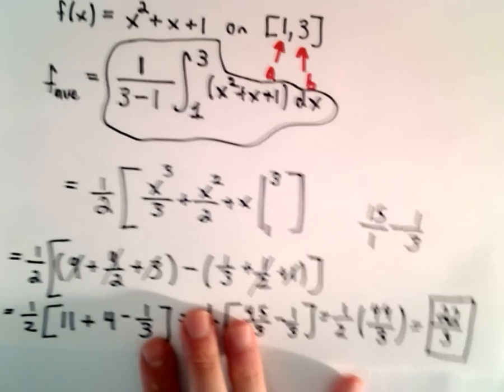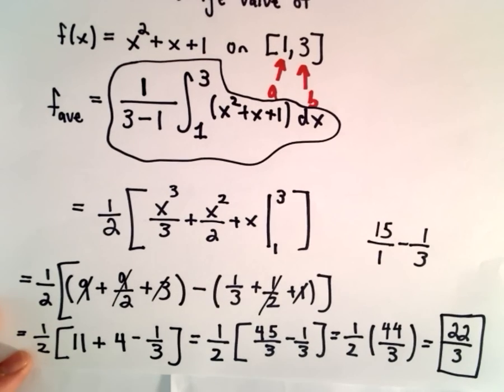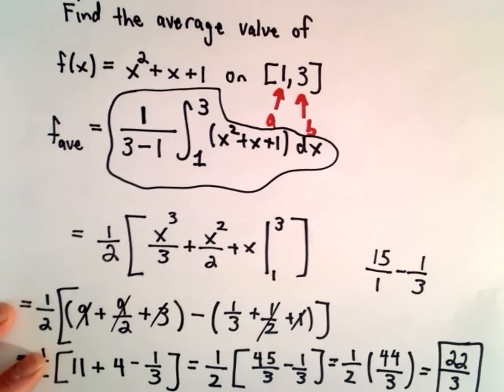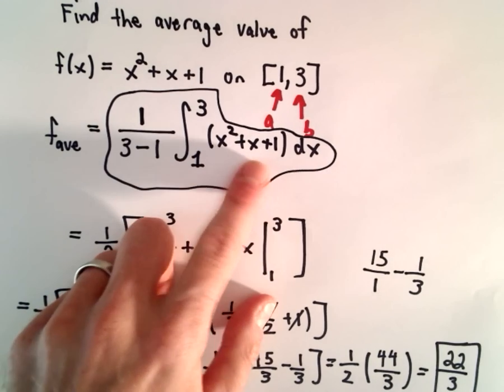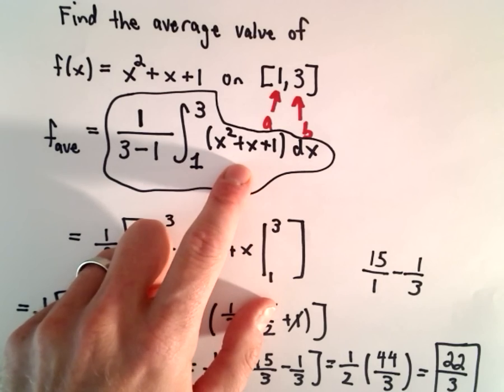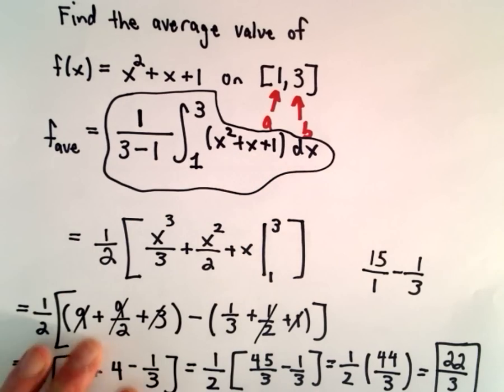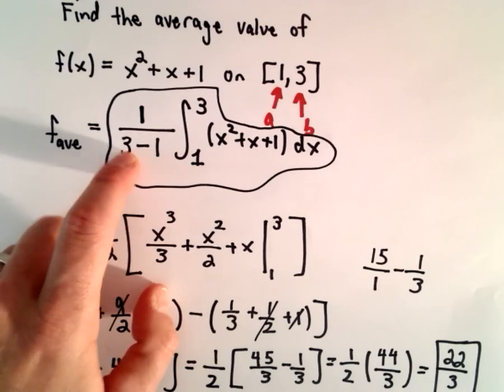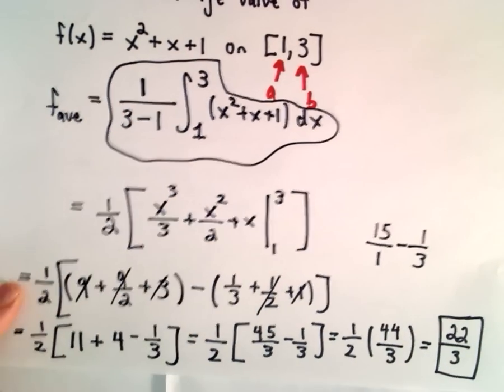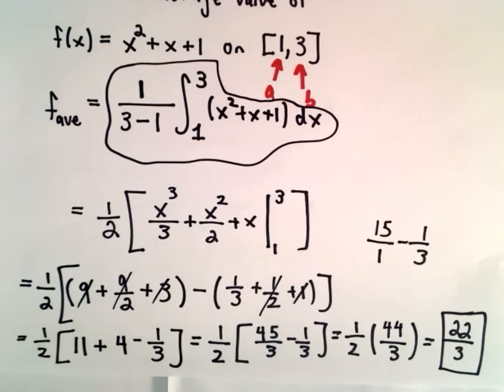So again, nothing too terrible at all. The only thing that can really make a problem like this difficult would just be if the function that you're calculating the antiderivative of is more messy. But other than that, it's just 1 over the length of the interval. Calculate your definite integral and multiply those values together. And that'll give you the average value.